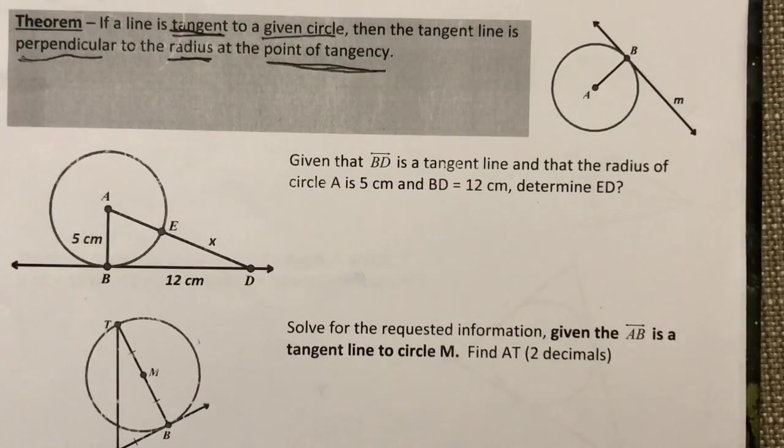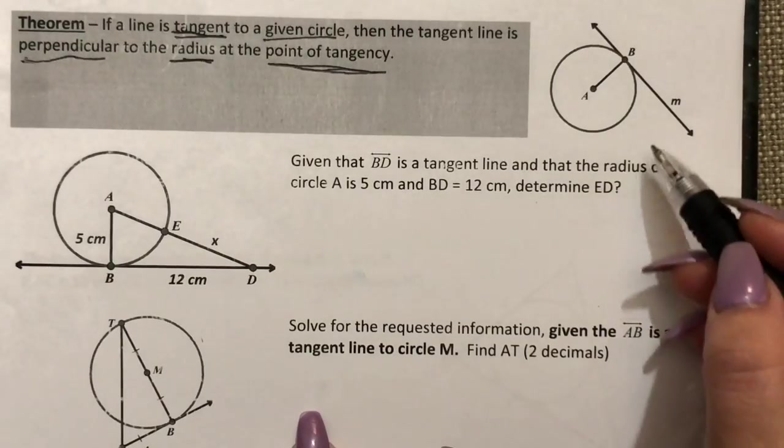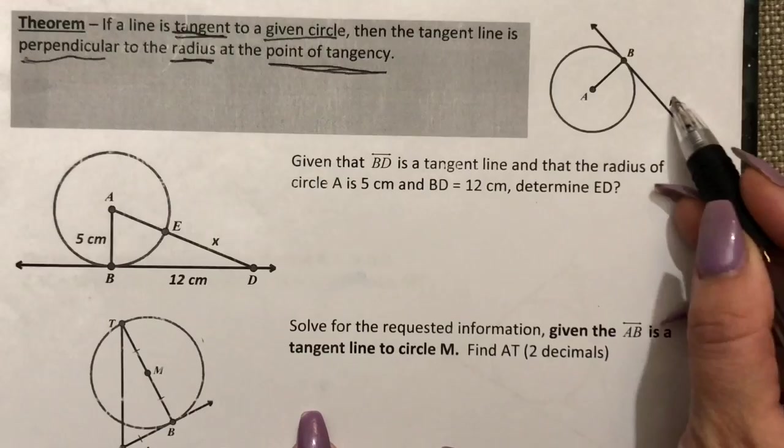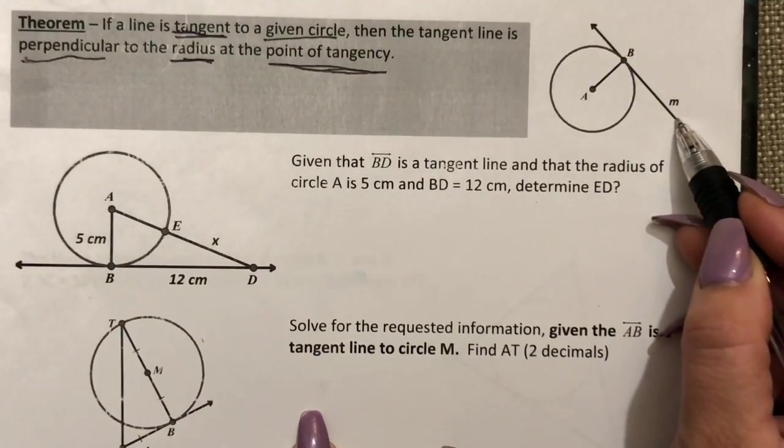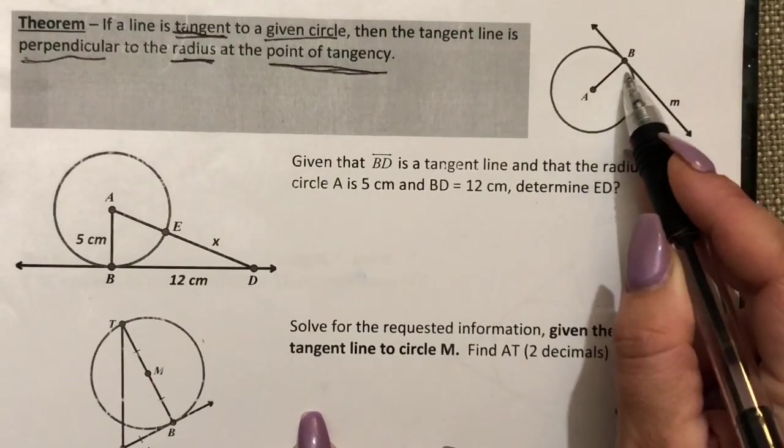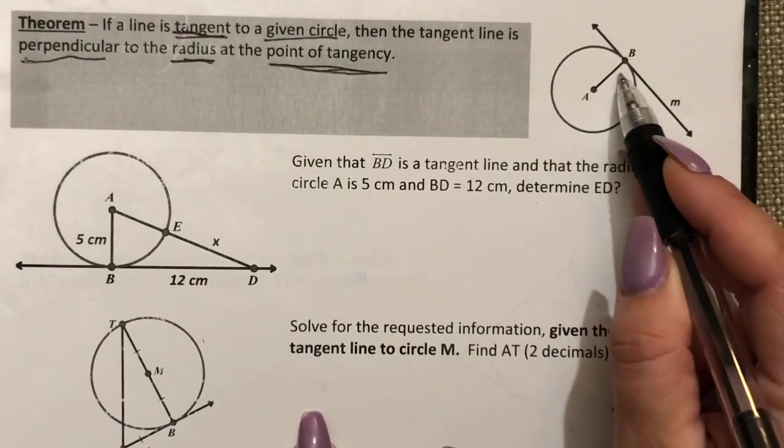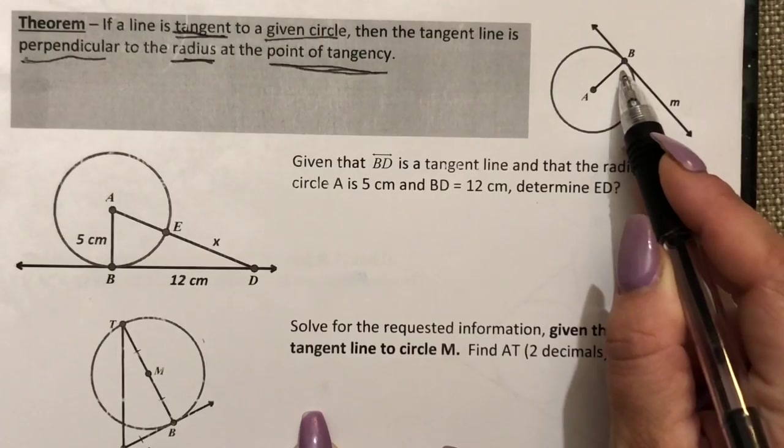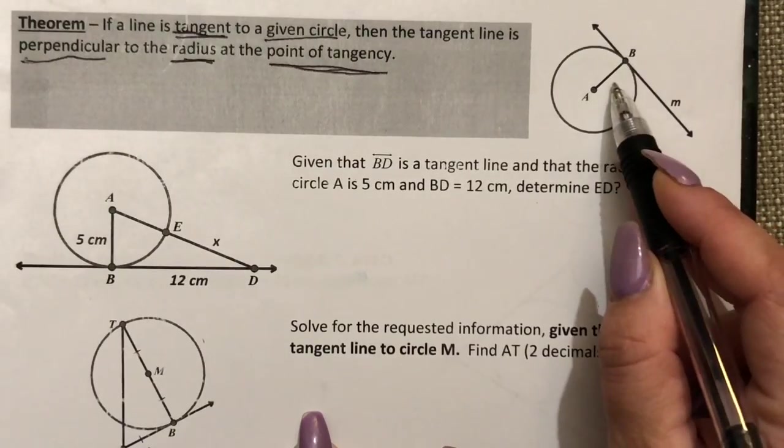The theorem for this property states that if a line is tangent to a given circle then the tangent line is perpendicular to the radius at the point of tangency. So again what you see here is that line M is tangent to this circle and it creates a 90 degree or perpendicular intersection right here at the point of tangency.